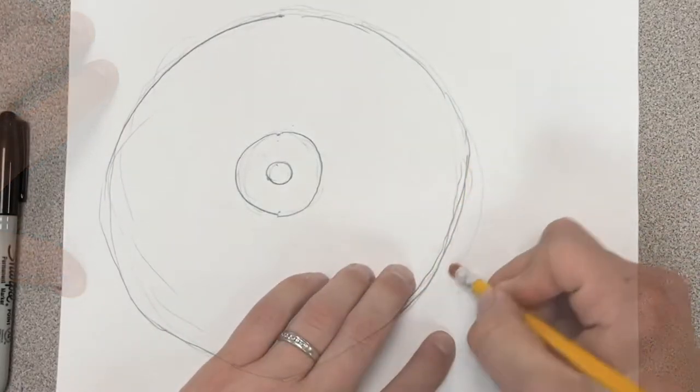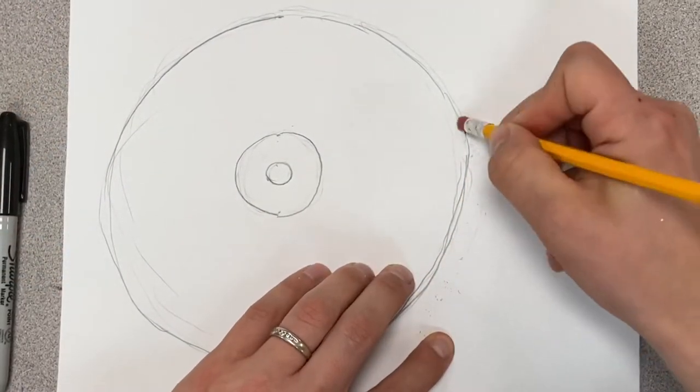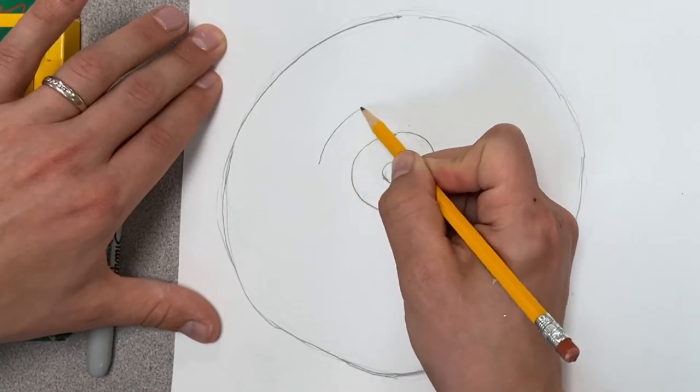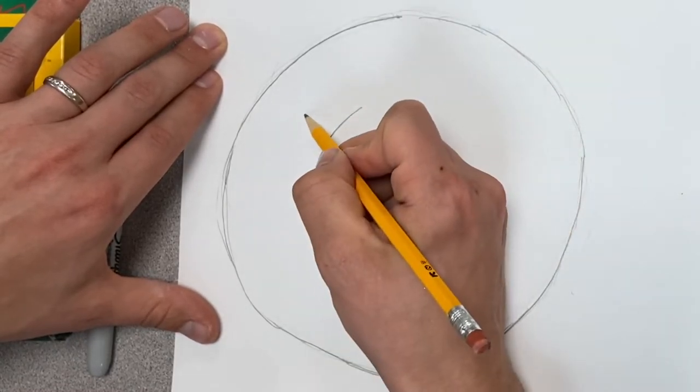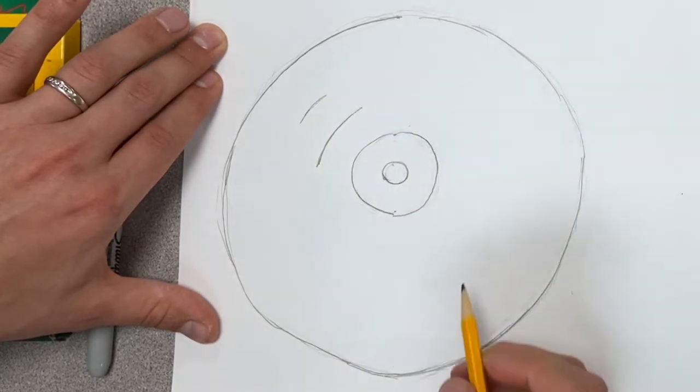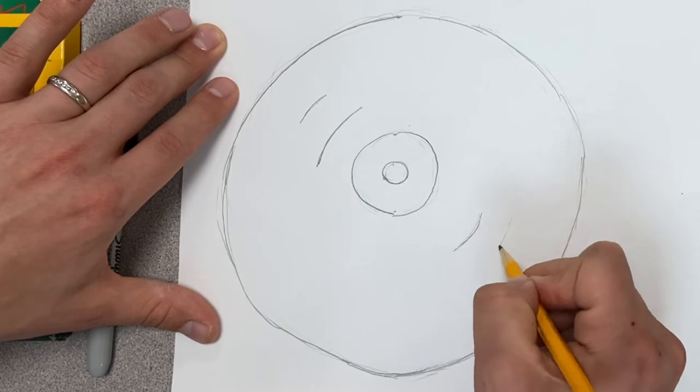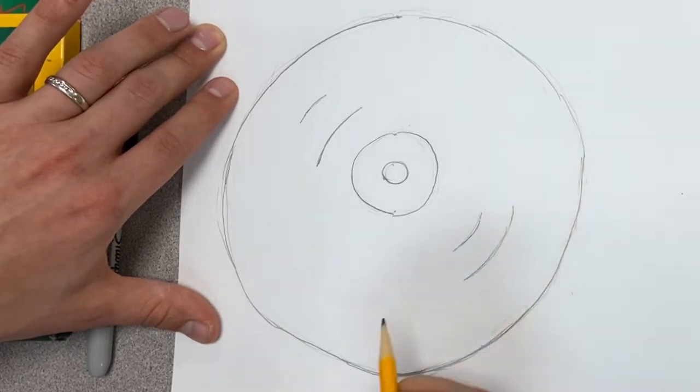Okay, nice. That doesn't have to be perfect. If you want, you can erase some of your lighter lines. You can put a couple lines that'll help it make it look a little bit more authentic. You can put one at the top, another one, and then another one, or another set, I should say, on the bottom. Little curves.